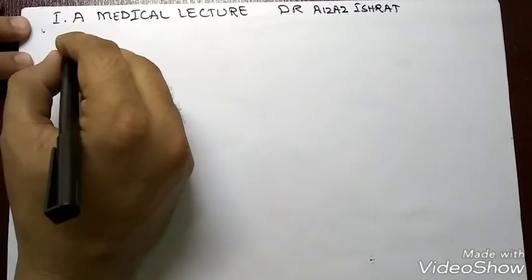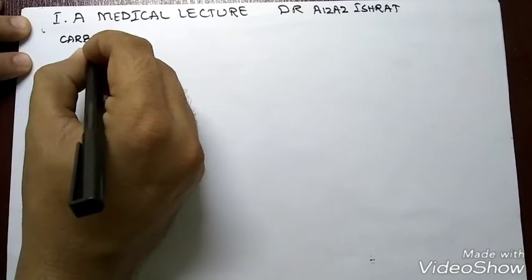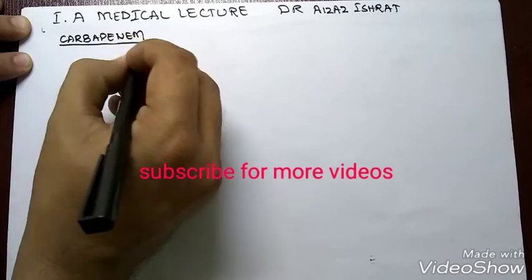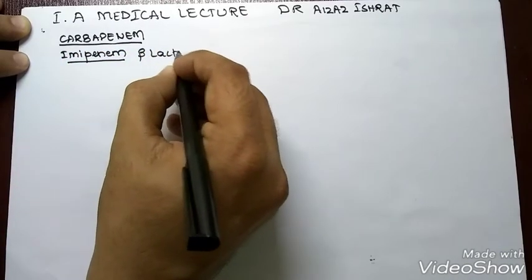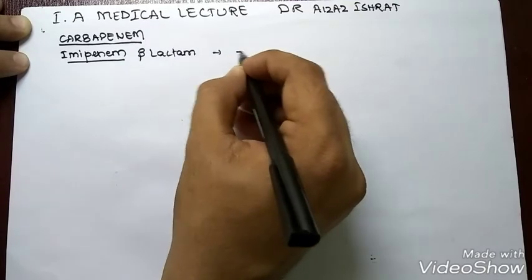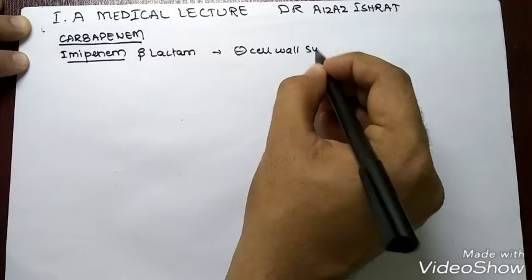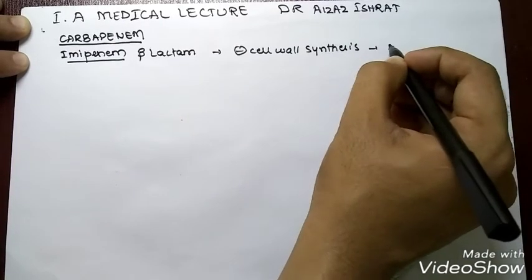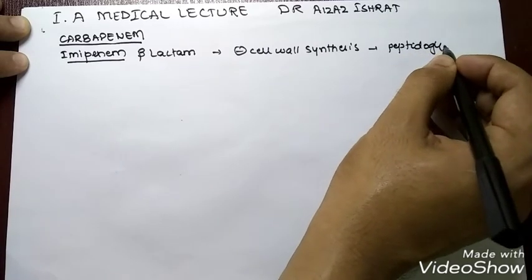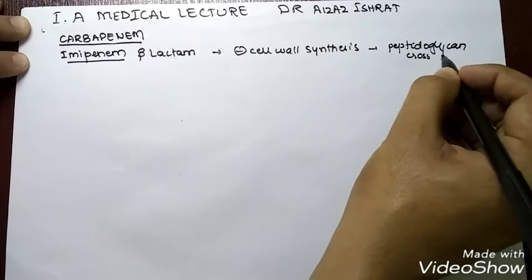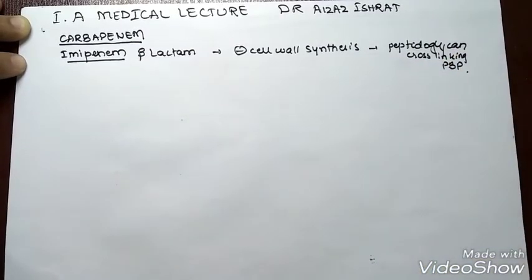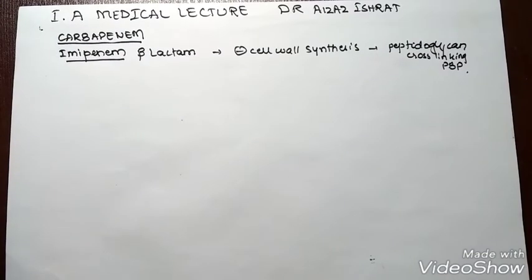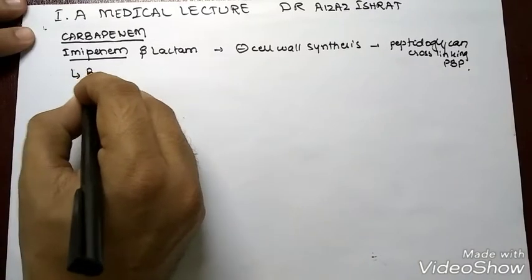We have done aztreonam, now it's time for imipenem. Imipenem belongs to the carbapenems. We know that imipenem is a beta-lactam — it has the same mechanism as aztreonam, meaning it inhibits cell wall synthesis by inhibiting peptidoglycan crosslinking by binding to the PBP (penicillin-binding protein). We have done this mechanism of action many times so we do not need to memorize it again.